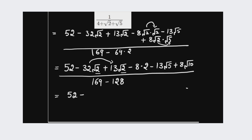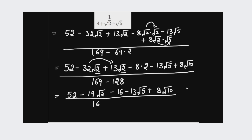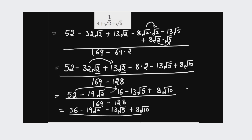Now collecting like terms: 52 minus 16 equals 36. For root 2 terms: −32 root 2 + 13 root 2 = −19 root 2. The remaining terms stay as −13 root 5 plus 8 root 10. So the final answer is (36 − 19 root 2 − 13 root 5 + 8 root 10) divided by 41.